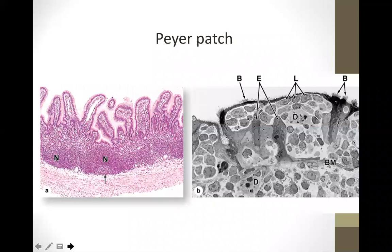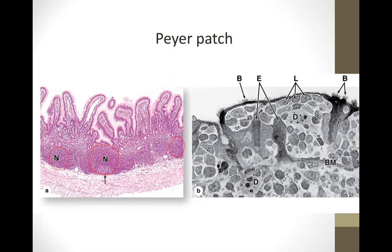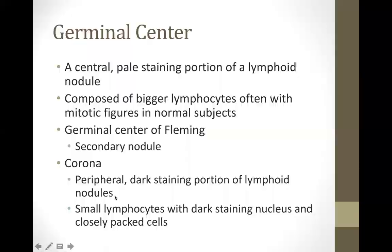This is an example of nodular lymphatic tissue — you can see an aggregate of lymphoid tissue forming a circular structure. This is actually a Peyer's patch. If found at the ileum specifically at the lamina propria, this is a nodular lymphatic tissue; at the ileum you may call these Peyer's patches.